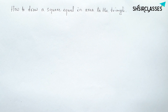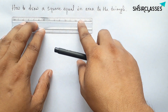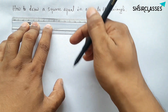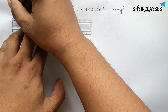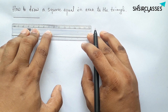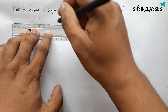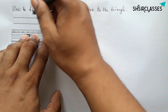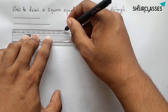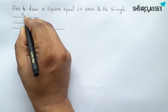First of all, let us choose three sides of the triangle: five centimeters, seven centimeters, and ten centimeters. You can choose any three sides of your choice, but always keep in mind that the sum of two sides must always be greater than the length of the third side.